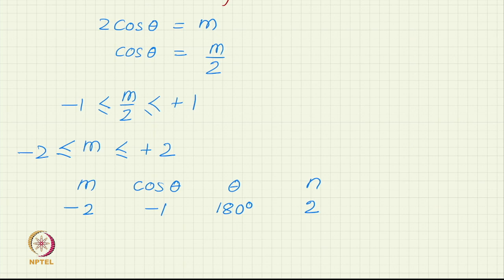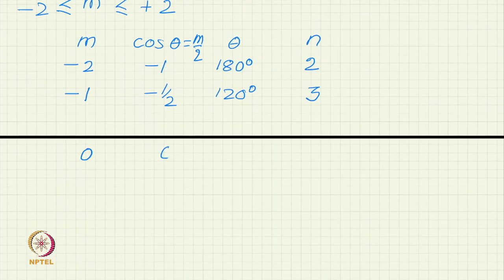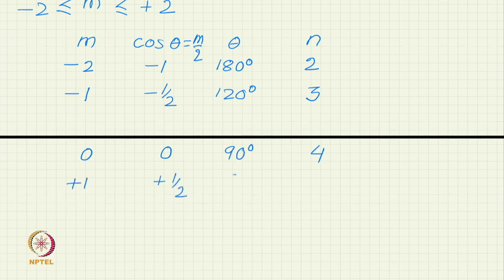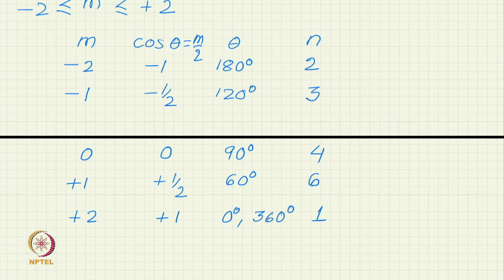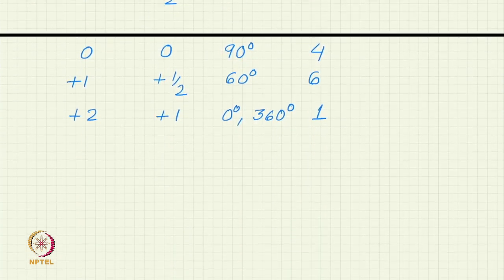If you take m is equal to minus 2, we start with the lowest value, then the corresponding cos theta which is m by 2 is minus 1. Theta becomes 180 degree. It is a 2 fold rotation axis. Minus 1 becomes a 3 fold rotation axis. These are the only possible rotation axis. Just like in 3D, 2D also has the same limitation.